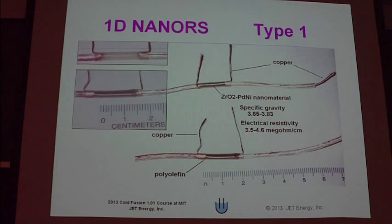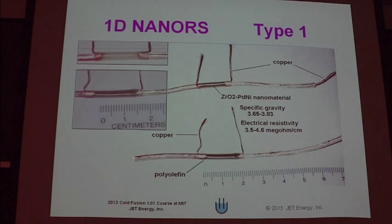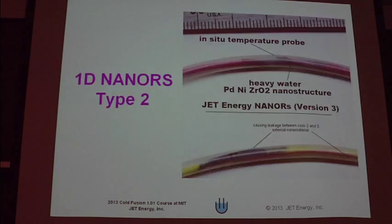The zirconia material has a specific gravity of about 3.7. The electrical resistivity before you do anything to it is around 4 megohm centimeter. And the advantage is, unlike with the fusor where we have to have very expensive palladium, gold, or platinum, here I can connect it up with copper. The first ones we used to cover them, then we had the series 2 nanors where we put the temperature measurement device in. We had later ones with ion exchange membranes.